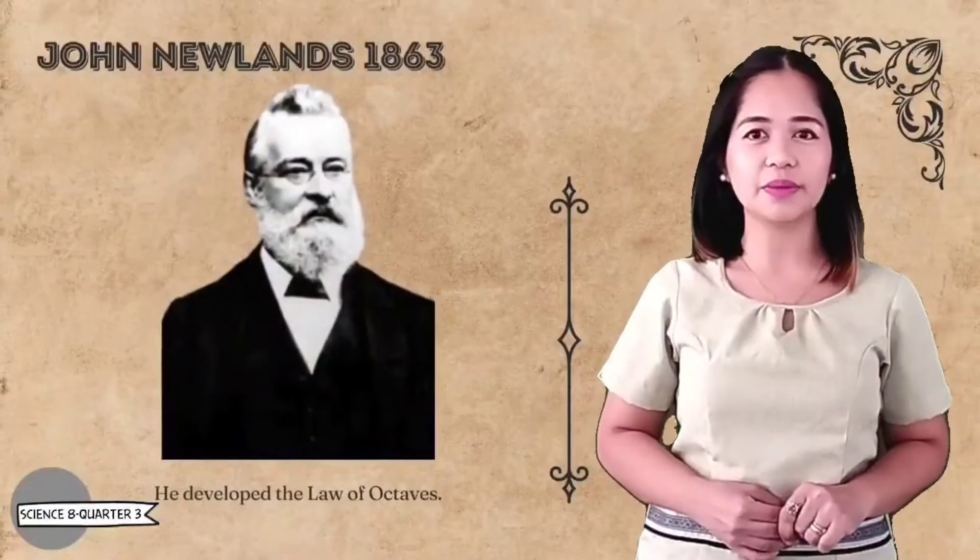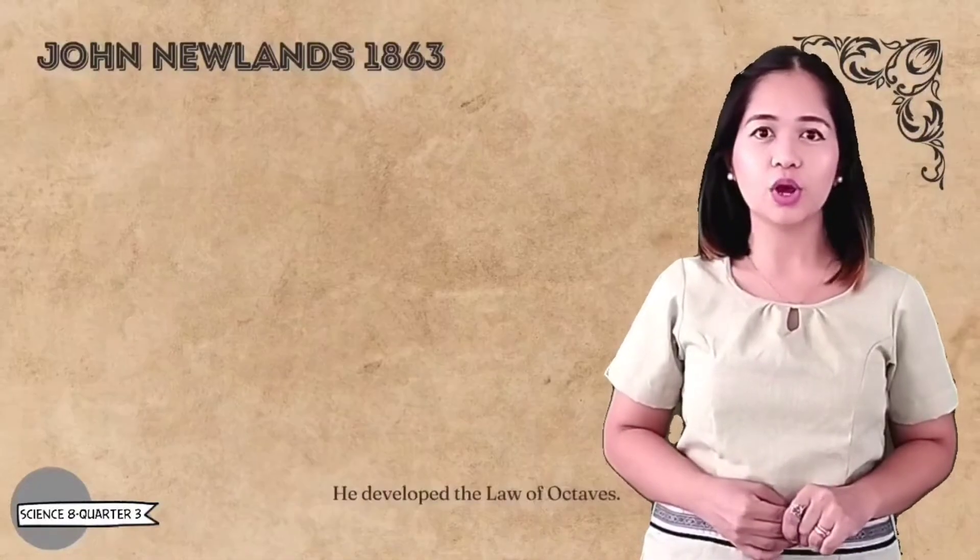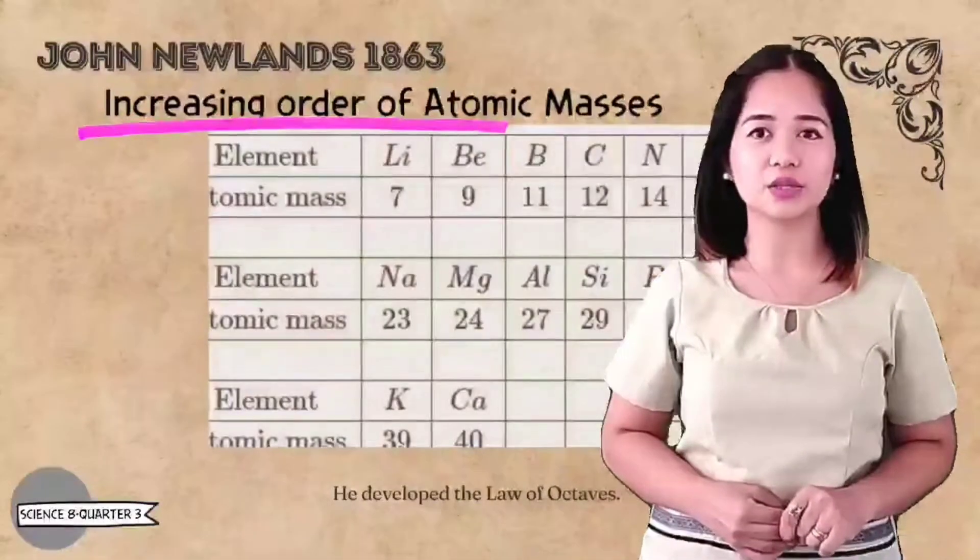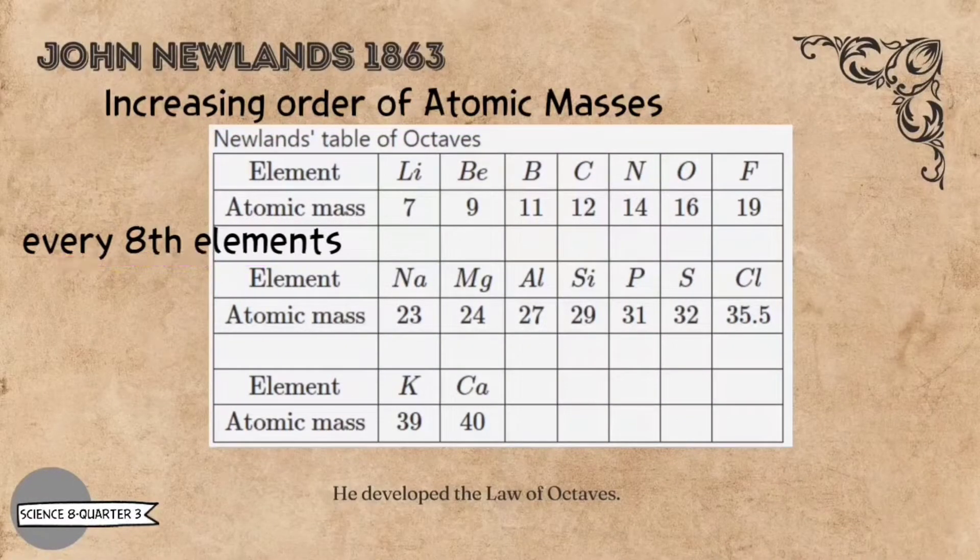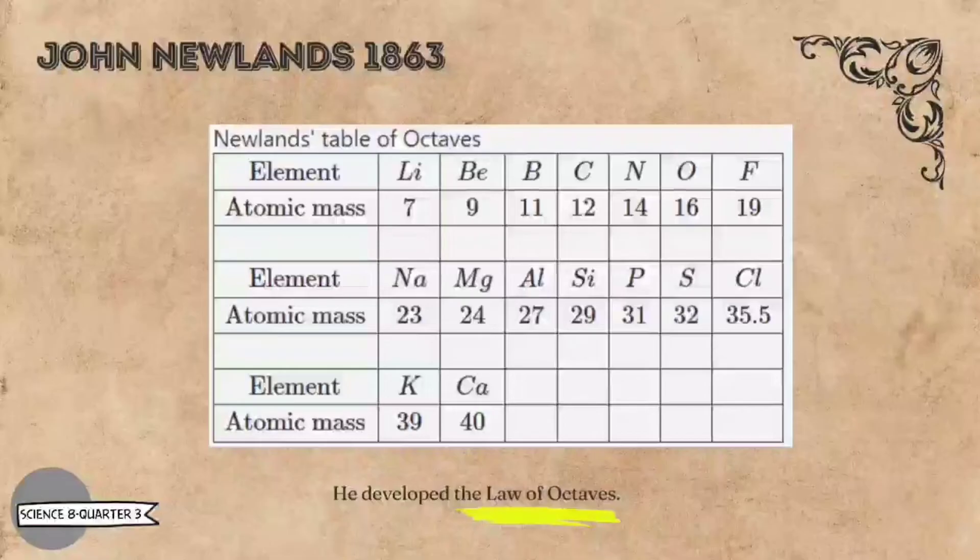British chemist John Newlands was the first to arrange the elements into a periodic table with increasing order of atomic mass. He found that every eight elements had similar properties and called this the law of octaves.